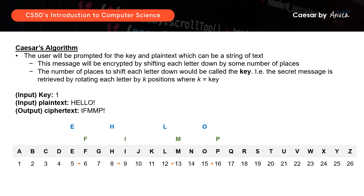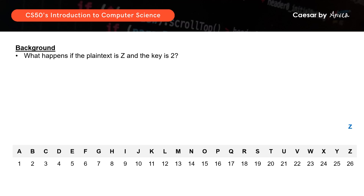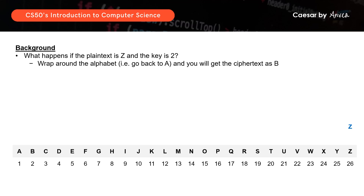You can see that the letters will still be uppercase and there's no change to the punctuation mark, which is the exclamation mark. Now, what happens if the plain text is Z and the key is 2? Z is the last letter of the alphabet in the 26th position, so we need to look back to the start of the alphabet and go down two places. In this case, the ciphertext for Z is B.